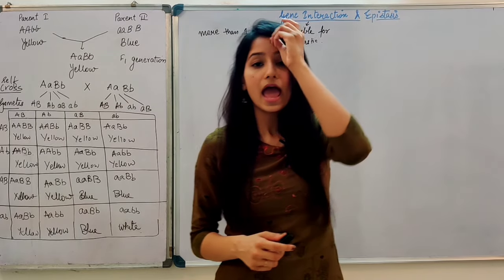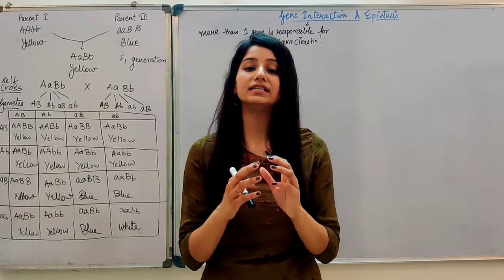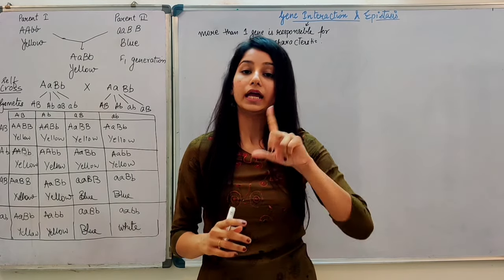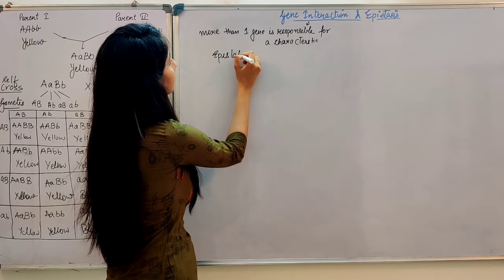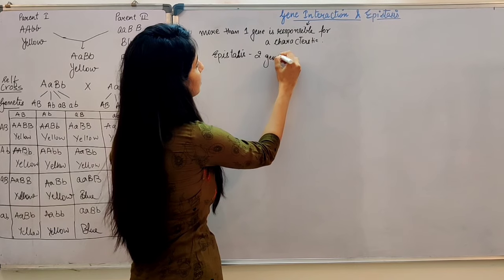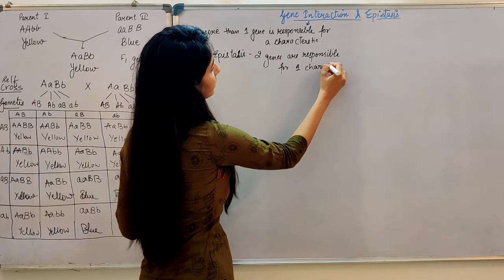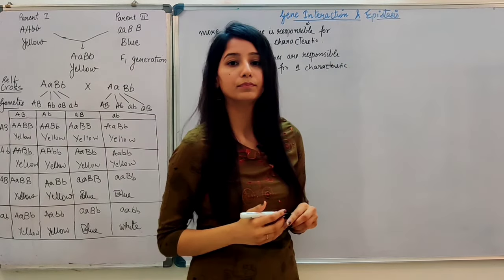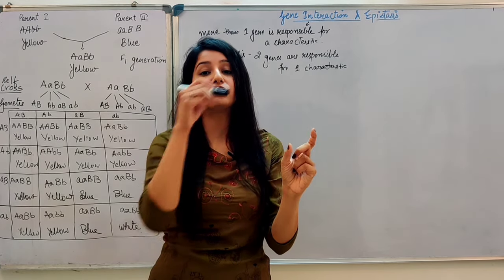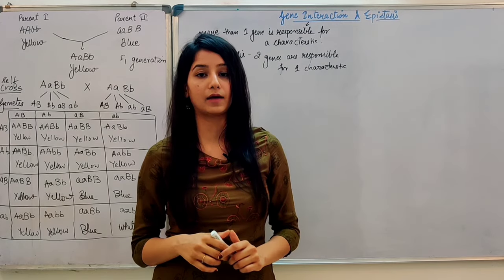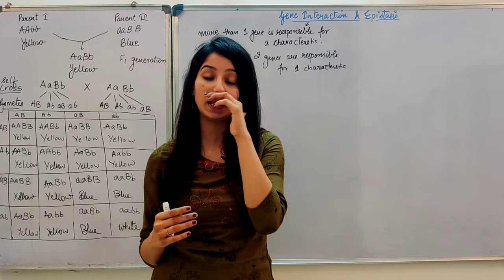We will now see epistasis. Epistasis is a type of gene interaction. What happens in epistasis? Two genes are responsible for each characteristic. One gene suppresses or masks the expression of the other gene. We will call this epistasis.